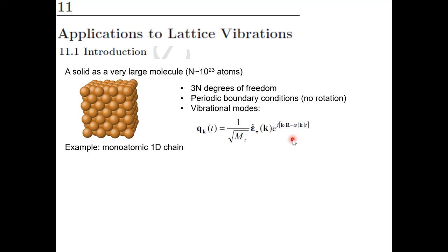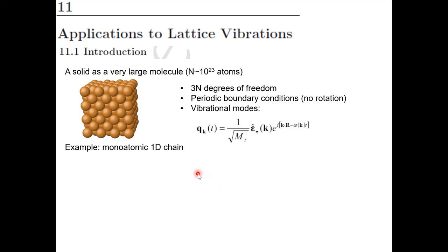This is a review of the basic vibrational properties of solids. If you want to review that more deeply, all this material is in any solid state or condensed matter physics book. The simplest case to consider first is the 1D atomic chain — just a chain of atoms in 1D where atoms are constrained to move in the 1D direction.